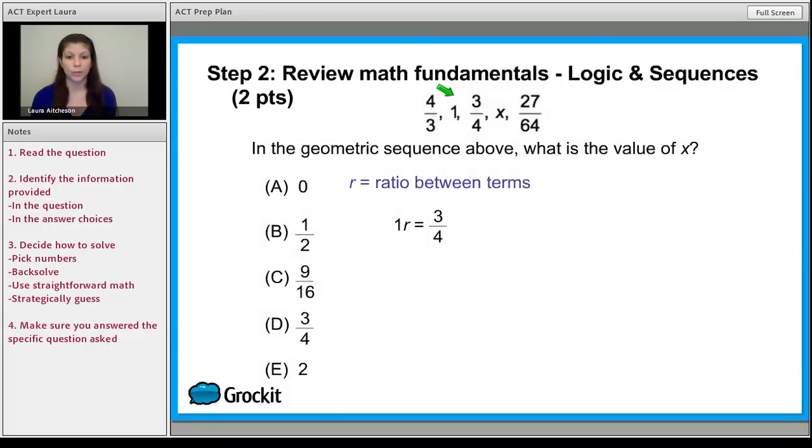You could have done it with 4 over 3 and 1. But this one's a lot easier, because you could just divide both sides by 1. And you'll find out that the R is 3 over 4, which is answer choice D. You're all done. Are you? They want you to solve for X. So be really careful.